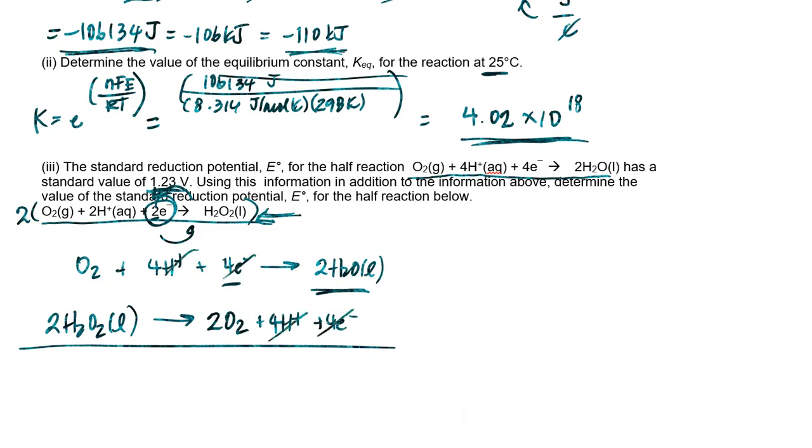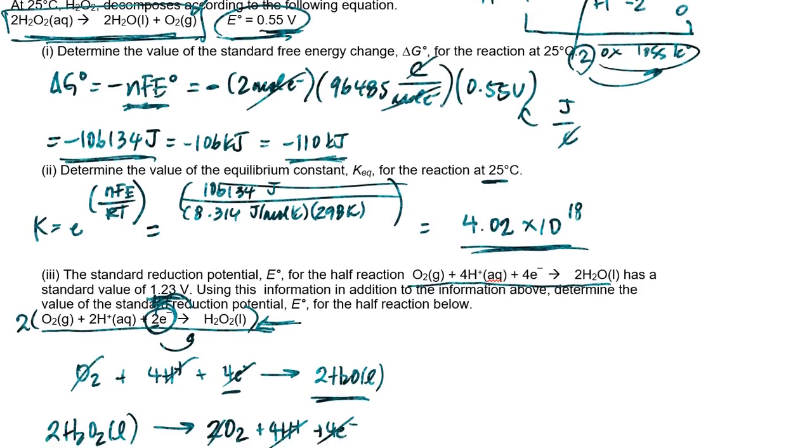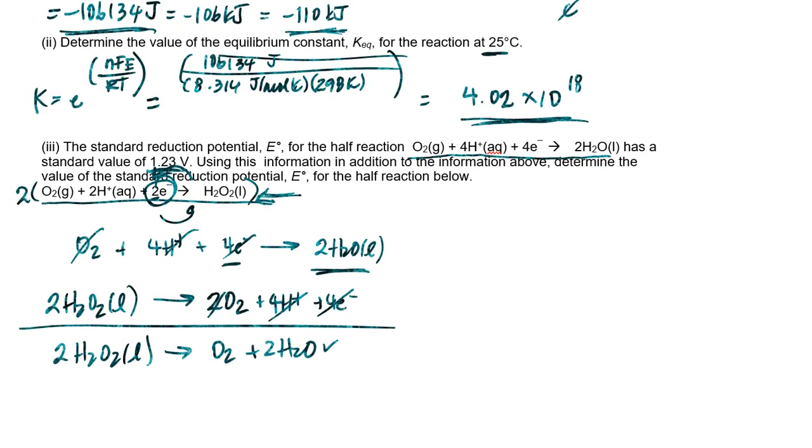And if I go ahead and cancel out everything that should cancel out, then I end up with the following. And if you notice, that pretty much matches what I had at the start of the problem. And so let's see what that does. This standard cell potential was given as 0.55 volts. We were told that this particular half reaction has a half cell standard reduction potential of 1.23 volts. Now, let's identify what process this is. If you notice here, basically what we've got is four electrons being gained. And so this must be the reduction process which takes place at the cathode.